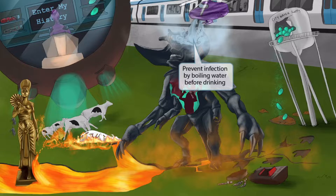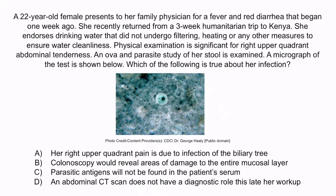Now that we've covered all the items in the image, let's do a question to apply what you've learned. A 22-year-old female presents to her family physician for a fever and red diarrhea that began one week ago. She recently returned from a three-week humanitarian trip to Kenya. She endorses drinking water that did not undergo filtering, heating, or any other measures to ensure water cleanliness. Physical examination is significant for right upper quadrant abdominal tenderness. An ova and parasite study of her stool is examined, and a micrograph of the test is shown below. Which of the following is true about her infection?